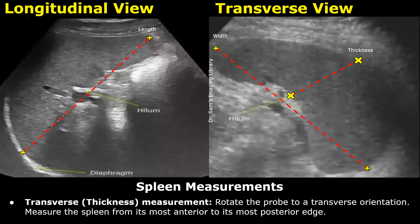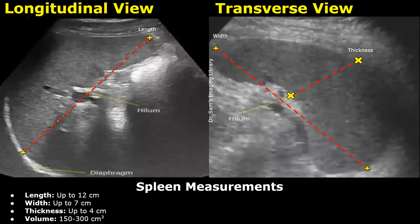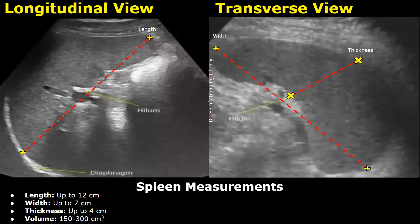Here are the general measurements of the spleen. Keep in mind that these values can vary amongst different institutions. The normal length of the spleen can be up to 12 centimeters, the width can be up to 7 centimeters, and the thickness can be up to 4 centimeters.